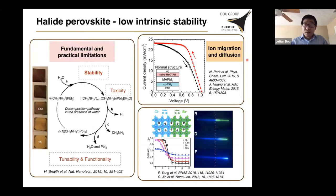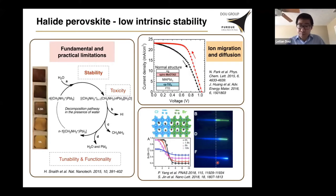We can actually visualize the ion migration and diffusion process by establishing nanowire heterostructures. In this case, it's a lead chloride and lead bromide nanowire. If you just heat it up slightly to about 80°C for a few hours, you can see the junction no longer exists — the chlorine and bromine diffuse into each other very rapidly. This is a key problem for halide perovskite, and it's an intrinsic problem. No matter how well you encapsulate the device, you are not going to solve this intrinsic instability.